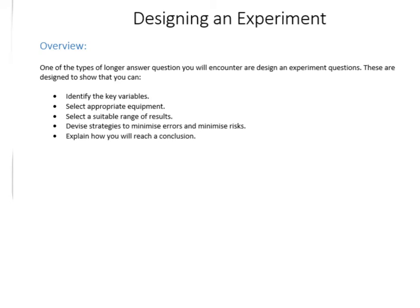The first thing you need to be able to do is identify your variables — your independent, dependent, and control variables. Next, you need to choose your equipment and select a suitable range of results to take. The fourth thing is to think about the causes of error in your experiment, the potential risks involved, and how to negate both of those. And finally, how you're going to reach a conclusion from your experiment — what you're going to take out of it that allows you to judge whether your objective has been met.